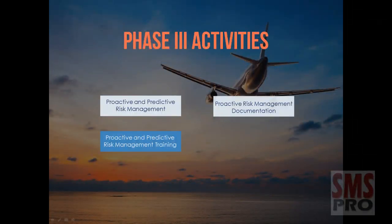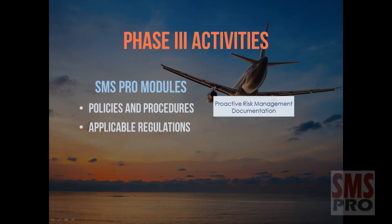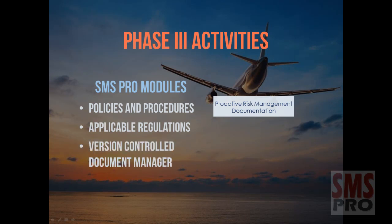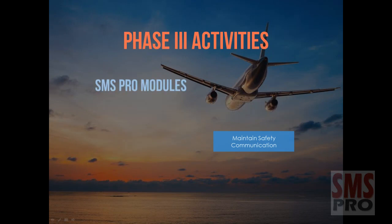Maintaining documentation relevant to proactive and predictive risk management processes uses the same modules identified in Phase 1: the Policies and Procedures module, the Applicable Regulations module, and the Version Controlled Document Manager. The modules identified in Phase 1 and Phase 2 continue to provide the means for safety communication throughout Phase 3.